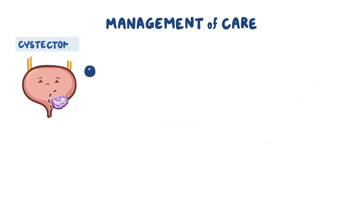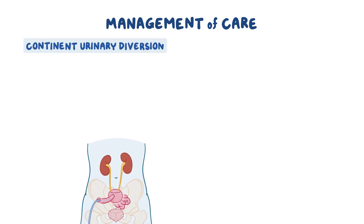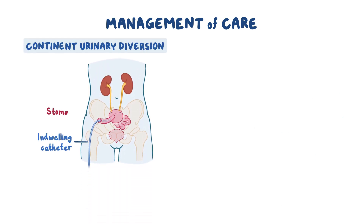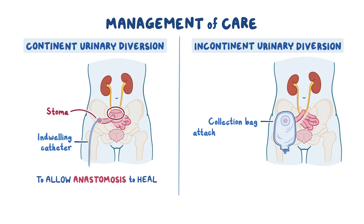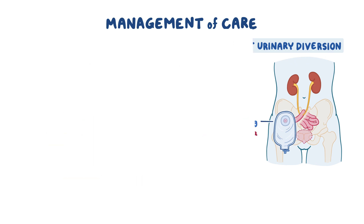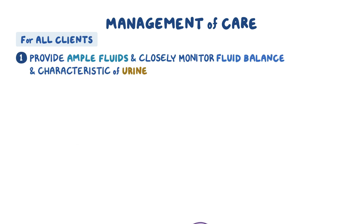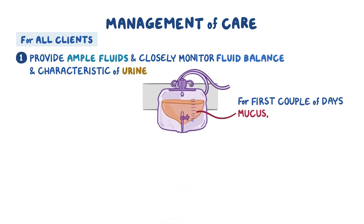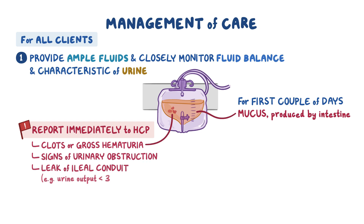If your client has had a cystectomy, provide routine post-operative care and monitor for complications. Clients with a continent urinary diversion will have an indwelling urinary catheter inserted through their stoma temporarily to allow the anastomosis to heal, while those with an incontinent diversion will have a collection bag attached to their stoma. Provide ample fluids and closely monitor fluid balance and urine characteristics. For the first couple of days, urine will contain some mucus and have a pinkish tinge. Report clots or gross hematuria, and report signs of urinary obstruction or ileal conduit leak, including urine output less than 30 mL per hour.